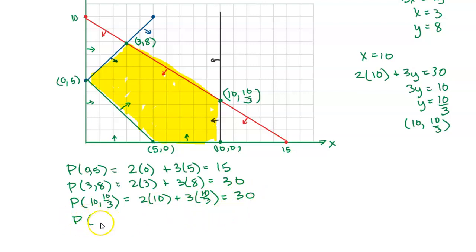The profit at the next corner, which is 10, 0, is 2 times 10 plus 3 times 0. That gives me 20. And my last corner is 5, 0. So that's 2 times 5 plus 3 times 0. And that gives me 10.